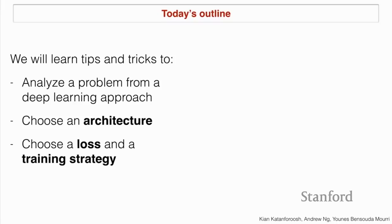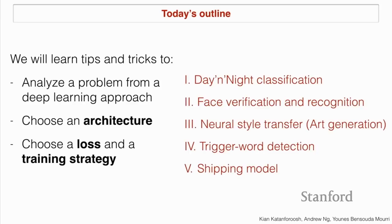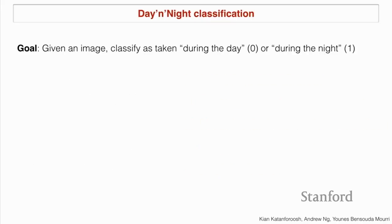Let's build intuition on concrete applications. We're going to start with a short warm-up: day and night classification, then quickly move to face verification and face recognition. After that, we'll do art generation and finish with trigger word detection. If we have time, we'll talk about how to ship a model — which is shipping architecture plus parameters — with an emphasis on the architecture, the loss, and the training strategy to help you make decisions during your project.